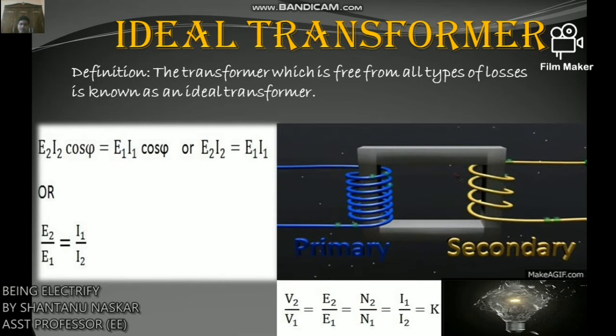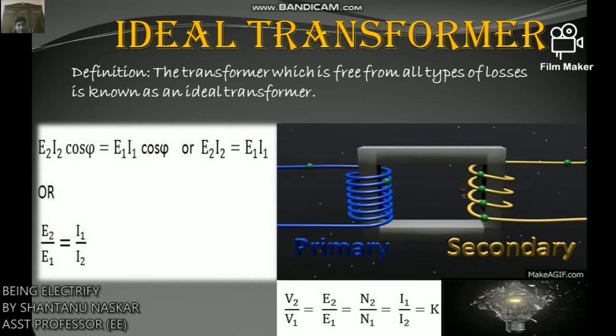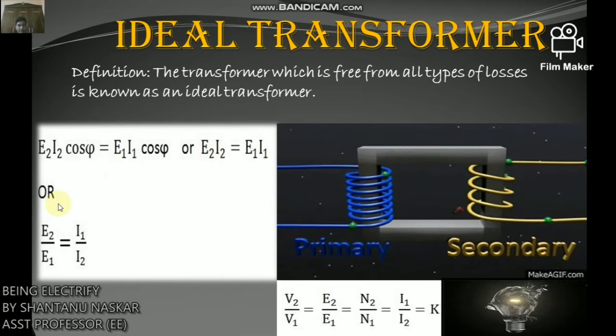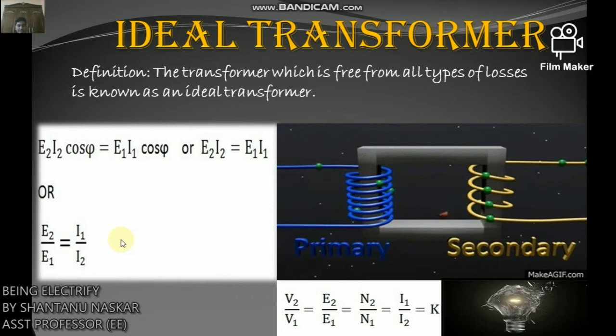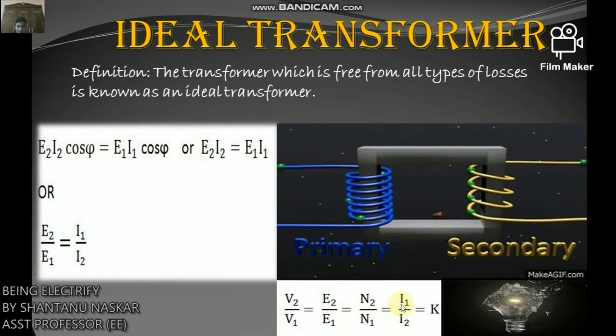In an ideal transformer there is no power loss, therefore output power equals input power: E2·I2·cosφ = E1·I1·cosφ, giving E2/E1 = I1/I2. Since E2 is proportional to N2 and E1 to N1, and E1 ≈ V1, E2 ≈ V2, the transformation ratio is: V2/V1 = E2/E1 = N2/N1 = I1/I2 = k. Thus primary and secondary currents are inversely proportional to their respective turns.